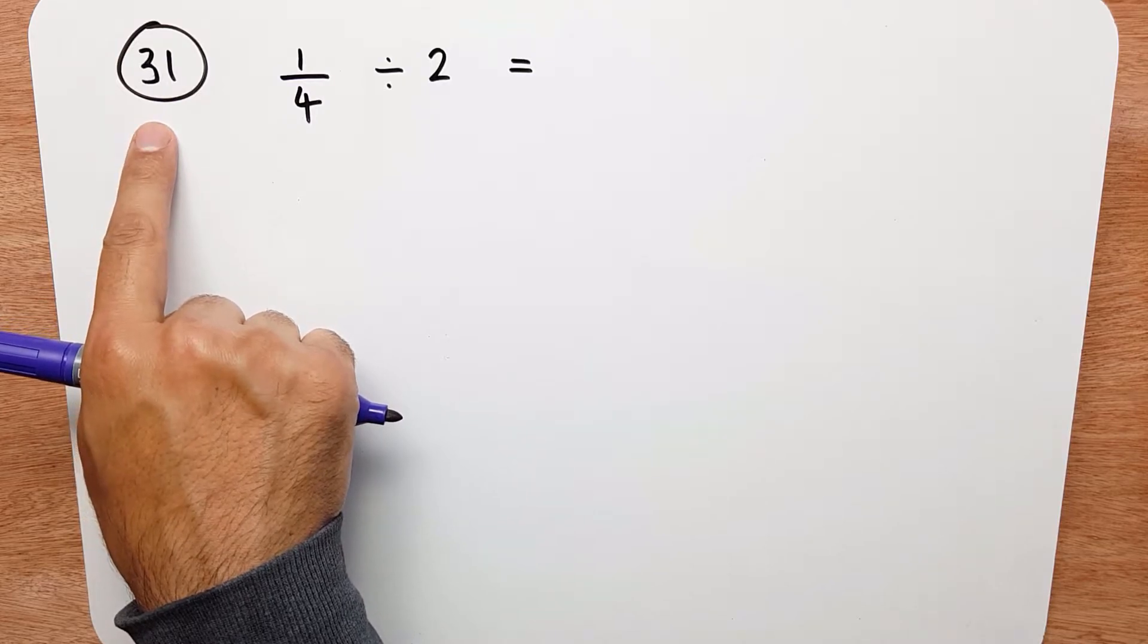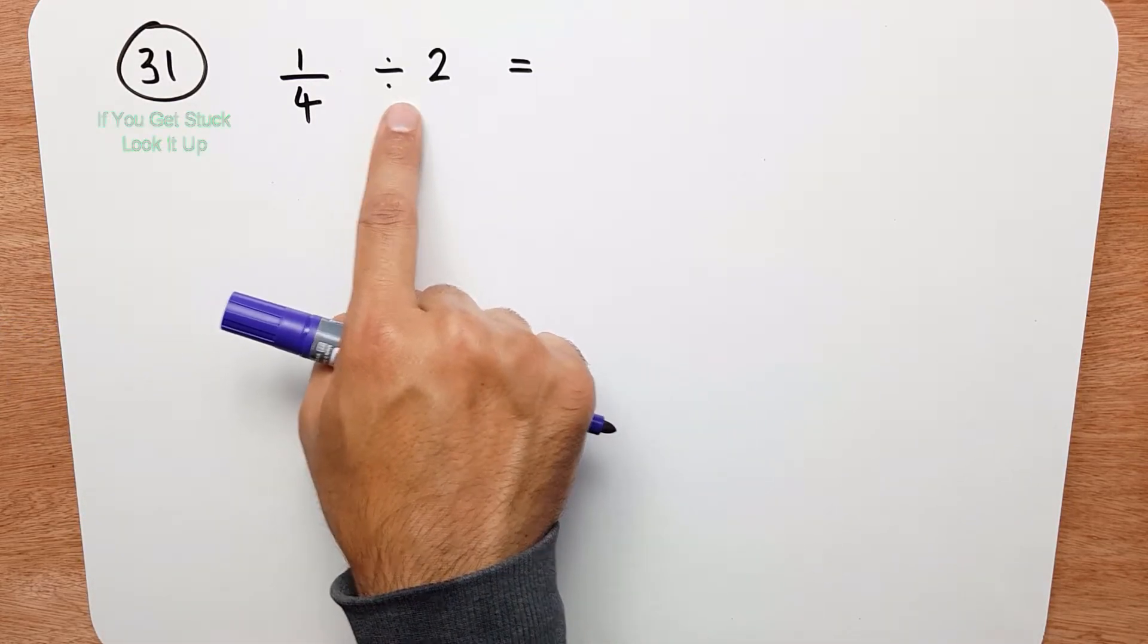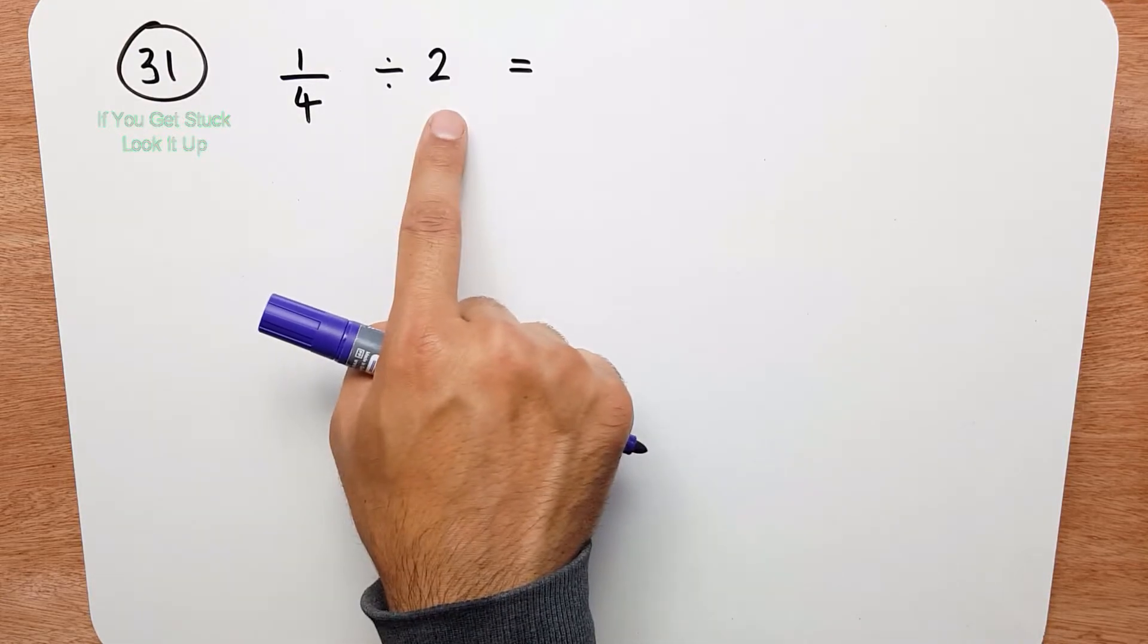Question 31. We're given 1 quarter divided by 2. Now you have a fraction and a whole number.